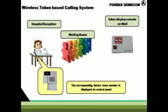Earlier, the receptionist has issued token numbers to each of the patients and requested them to be seated till their turn comes up. Till this time, the token console panel is not showing any number. The token console panel is kept in the patient waiting room so that it is visible to all.